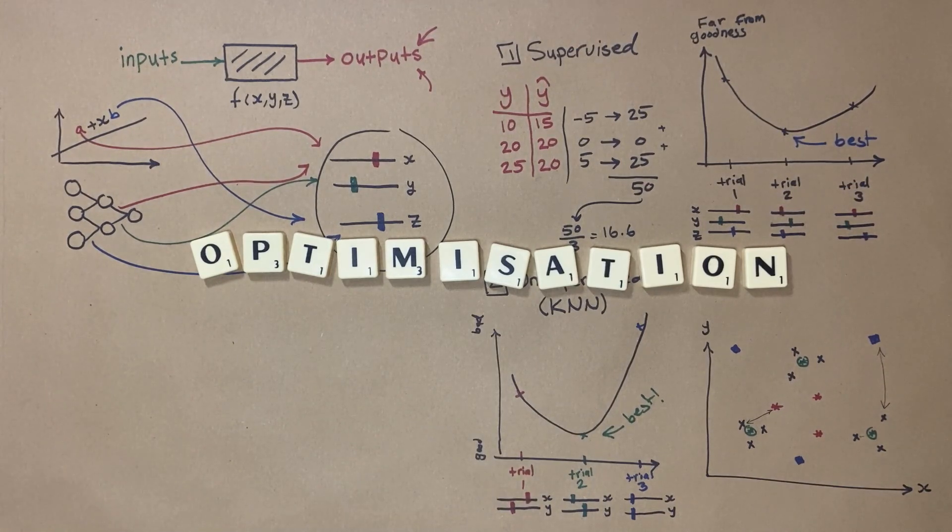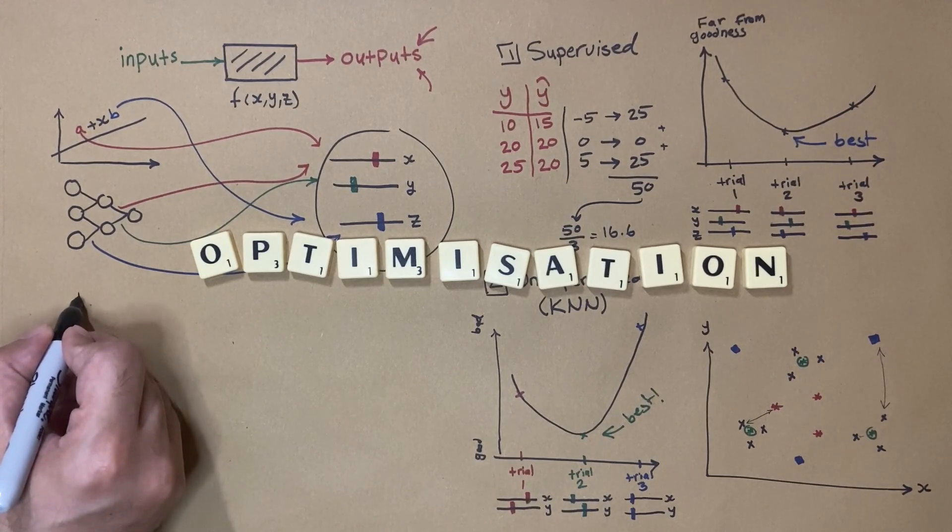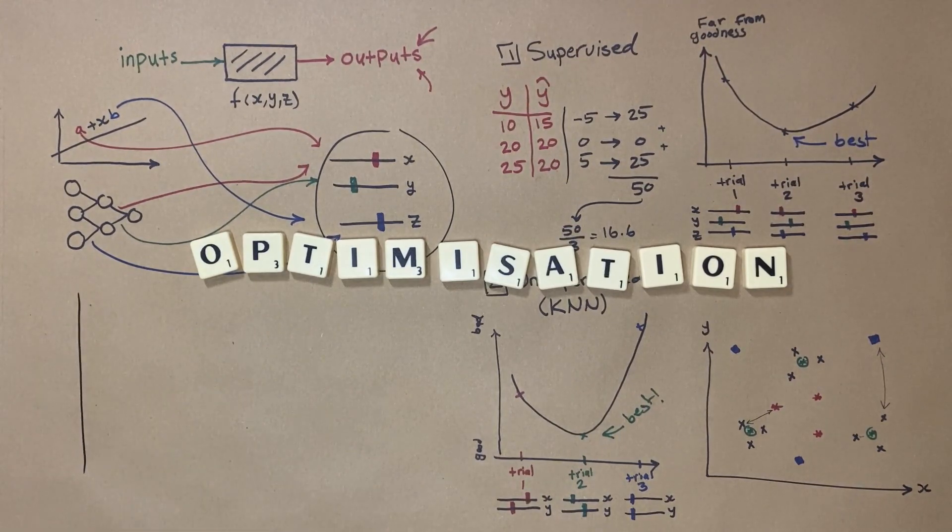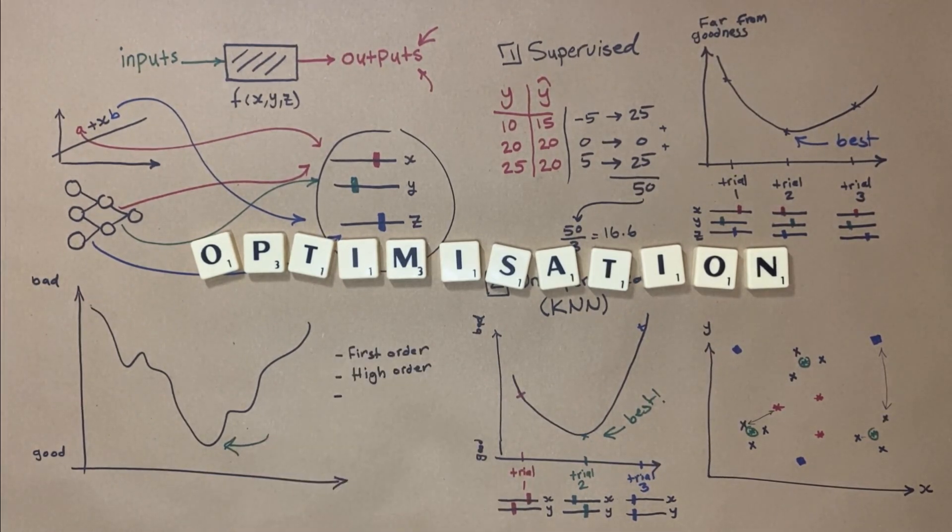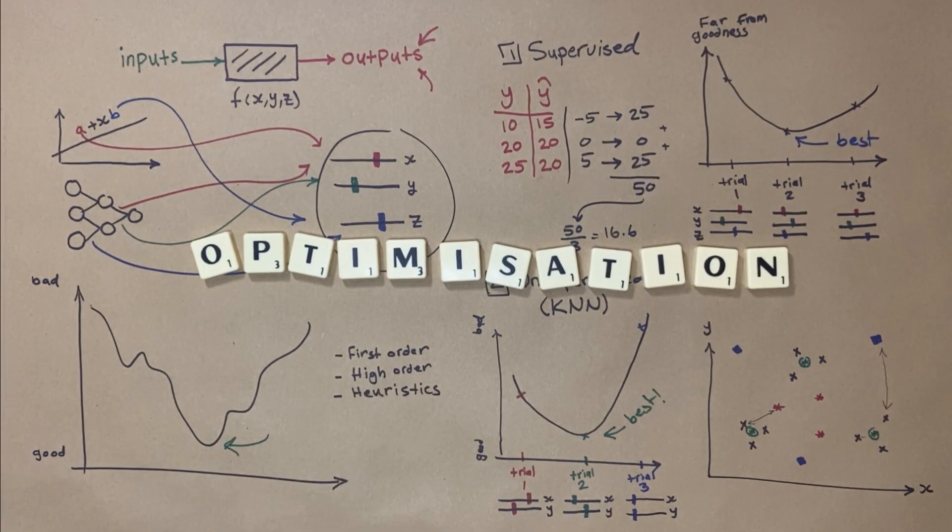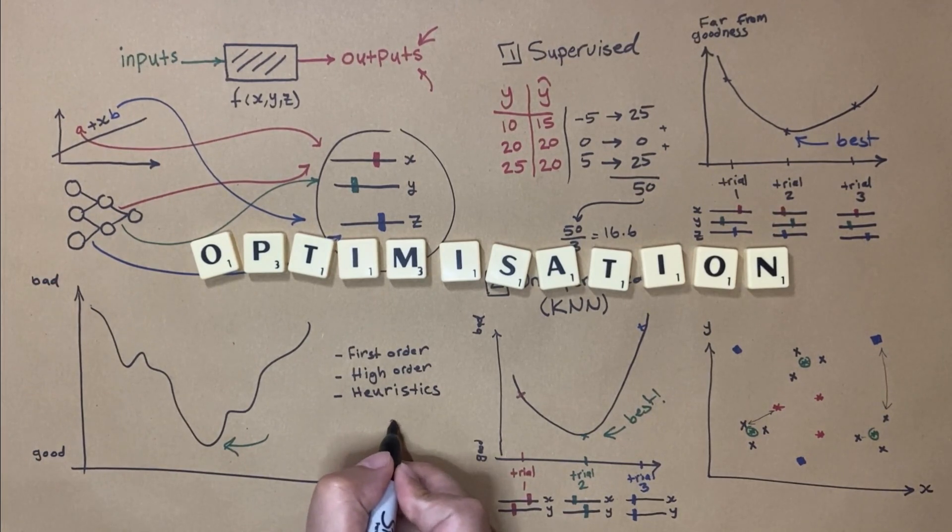One more important note here is that the error curve doesn't always look as simple as I drew earlier. It could be as ugly as this, or even more. So we need a mathematical or automated way to find the optimal parameters that gives us the lowest error possible. Luckily, we have several optimization algorithms out there. We can categorize them into three groups. The first order optimization algorithms, high order optimization algorithms, and heuristics. For example, the famous gradient descent algorithm is a first order optimization algorithm, while genetic algorithm belongs to the heuristic category.